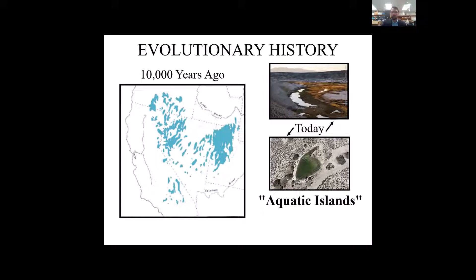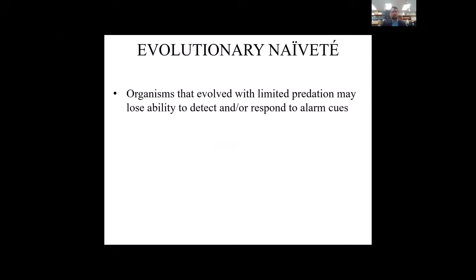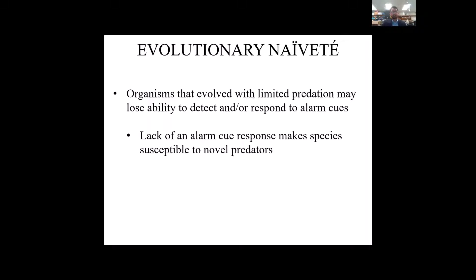The aquatic islands have very low connectivity, and the species that live within them are subject to low predation and low competition. Organisms that evolved with limited predation may lose the ability to detect and/or respond to alarm cues. This is what is known as evolutionary naivety. The lack of an alarm cue response makes species susceptible to new predators.